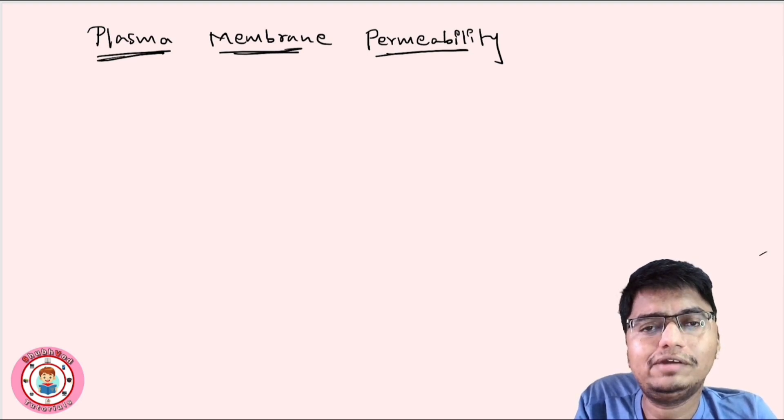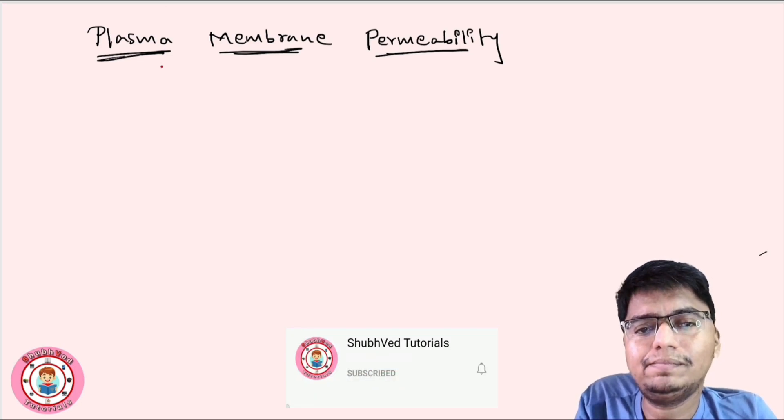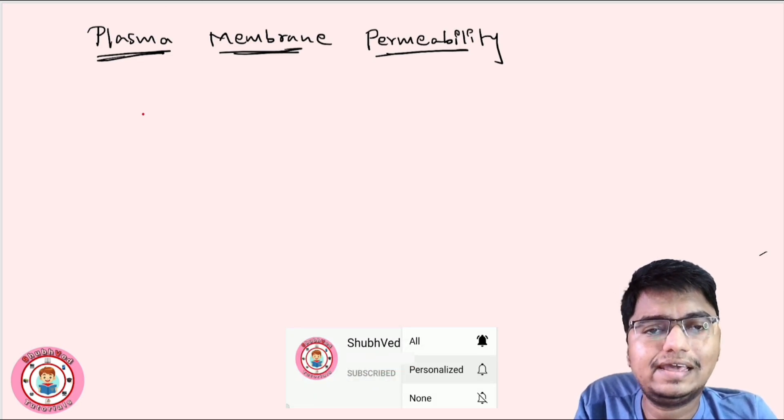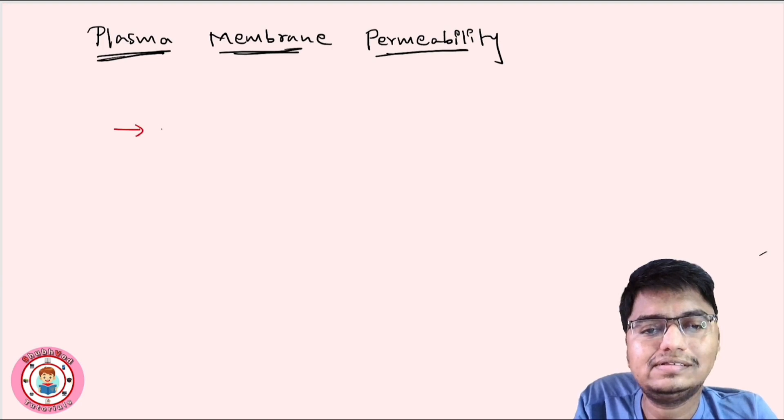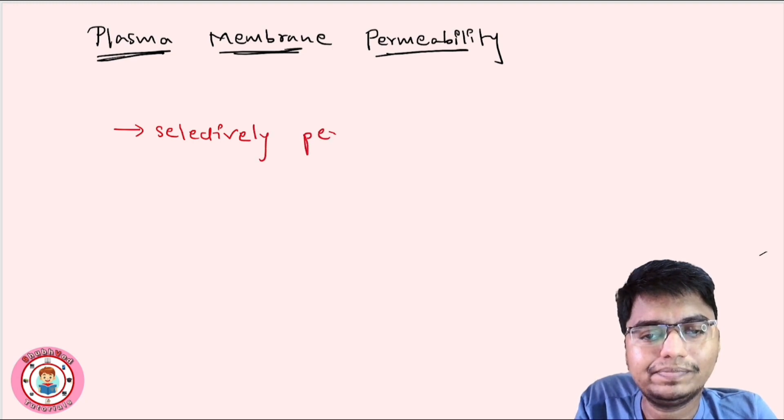This is a short video but very important. We know the nature of plasma membrane. It is selectively permeable. All the molecules cannot pass through the membrane. Selected molecules can pass.